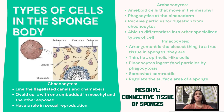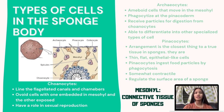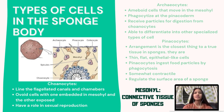We will now be talking about the types of cells in the sponge body. Sponge cells are arranged in the mesohyl or mesenchyme. The first type are choanocytes. Choanocytes line the flagellated canals and chambers and are ovoid cells with one end embedded in the mesohyl and the other exposed. This exposed end forms a filtering device for straining food particles from water. Particles that are too large are phagocytized by the cell body. Digestion is entirely intracellular.